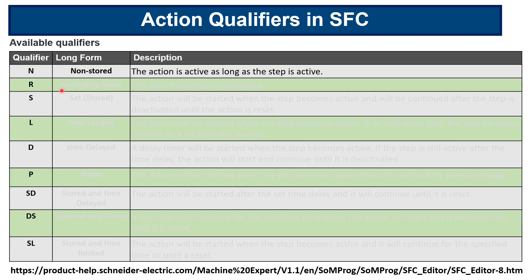Here you can see the available qualifiers for the actions in SFC, for the IEC actions, which include N, R, S, L, D, P, SD, DS, and SL — nine in total. I'll go through all of them one by one, and I will show you in the Codesys environment how this affects the way in which the action is executed.